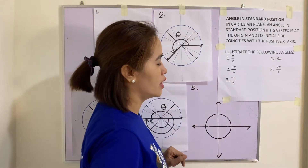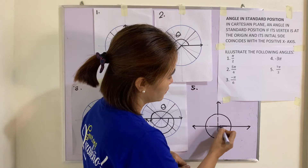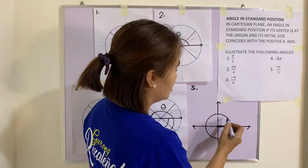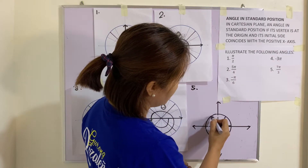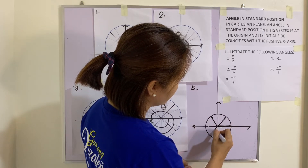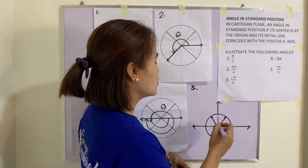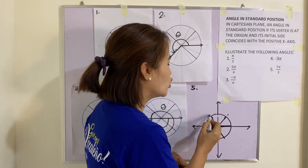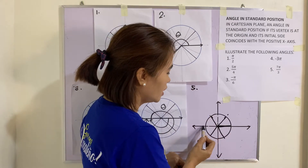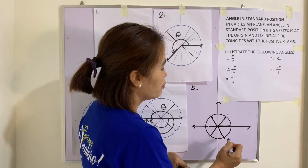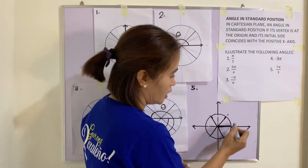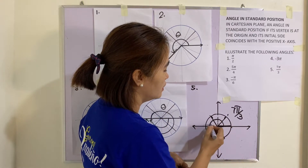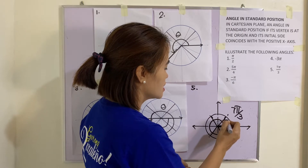Number five: we have 7π/3, which is positive, so counterclockwise. Dividing by three: π/3, 2π/3, 3π/3, 4π/3, 5π/3, 6π/3, and 7π/3 — that is one complete turn and then this additional amount. This is the angle 7π/3.